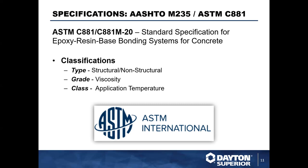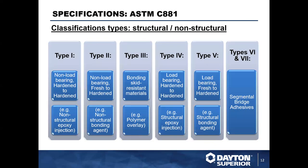Most epoxies fall under ASTM C881 — the standard specification for epoxy resin bonding compounds — as well as AASHTO M235. There are different types, grades, and classes. Type 1 is non-load bearing. Type 2 is non-load bearing, fresh to hardened concrete. Type 3 is for bonding skid-resistant materials. Type 4 is load bearing, hardened concrete to hardened concrete. Type 5 is load bearing, fresh concrete to hardened concrete, typically used for segmental bridge adhesives.